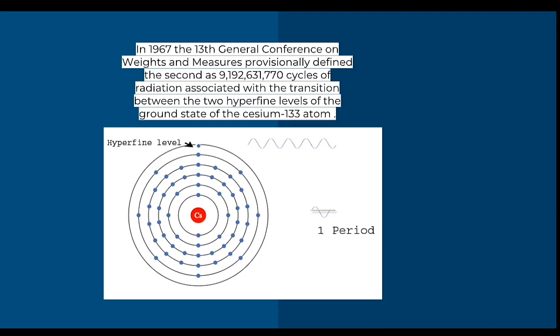In 1967, the 13th General Conference on Weights and Measures provisionally redefined the second as 9,192,631,770 cycles of radiation associated with the transition between the two hyperfine levels of the ground state of the cesium-133 atom.